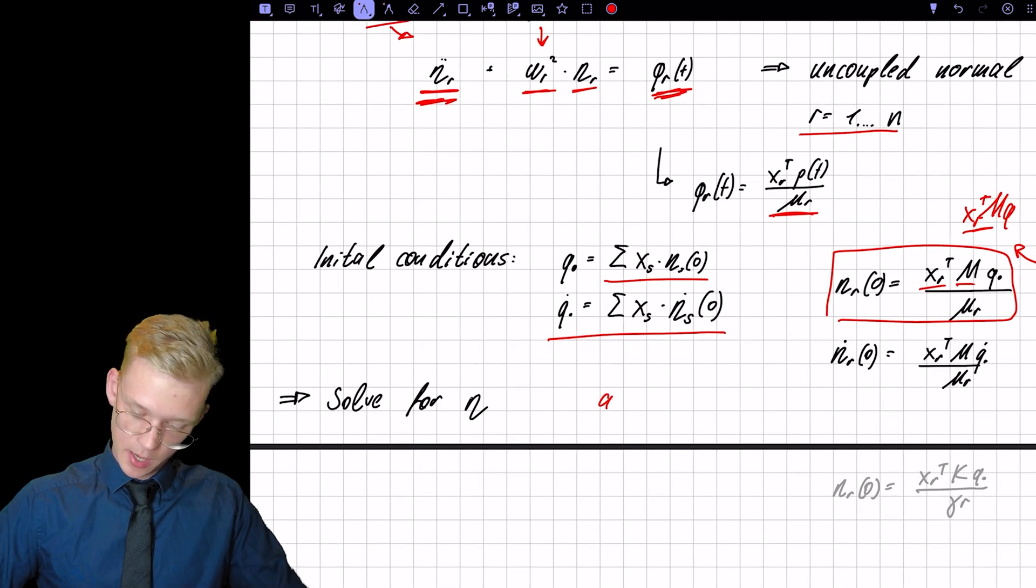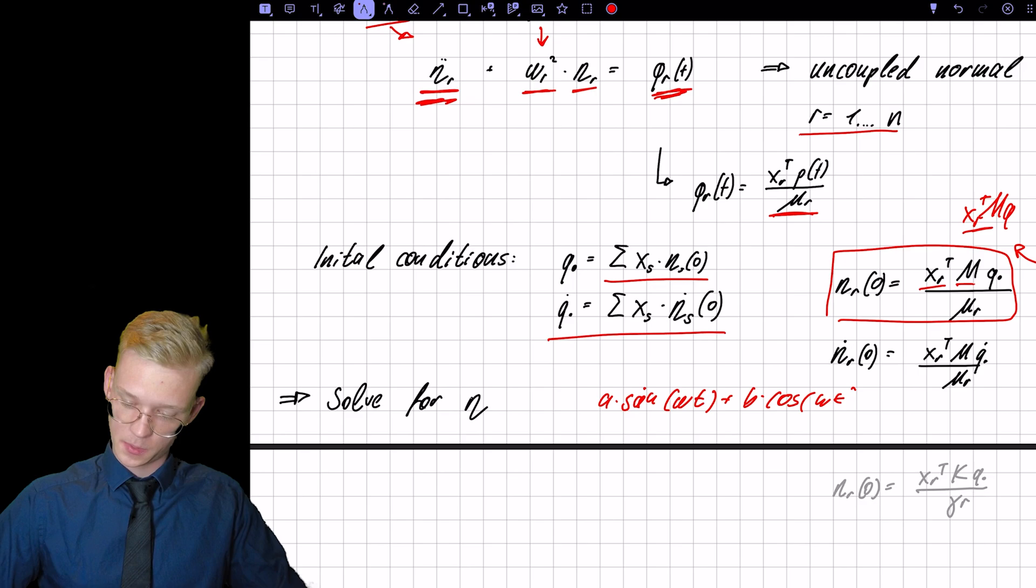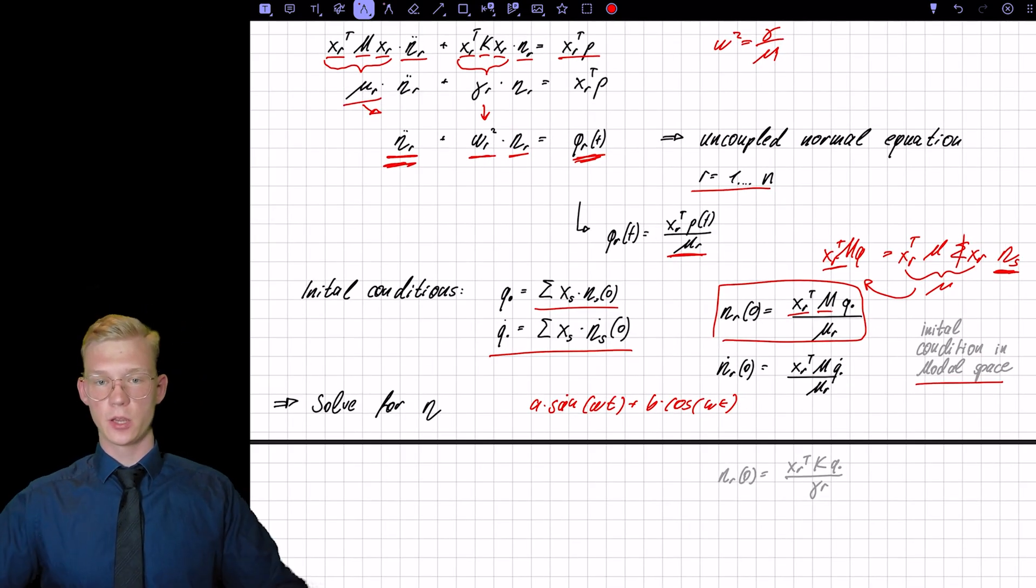And eta will look something like A times, I think it starts with a sine, omega t plus B times cosine omega t. But this will be, we'll be covering this in another video.